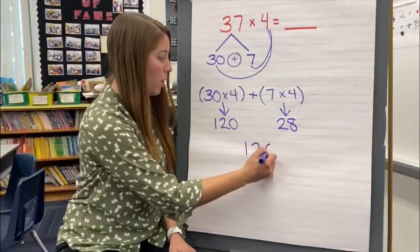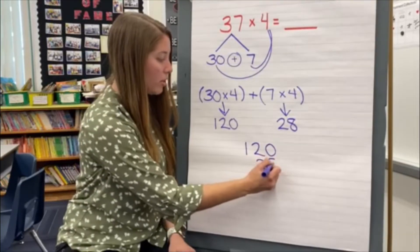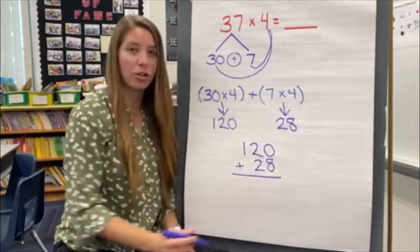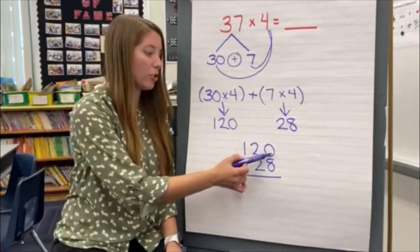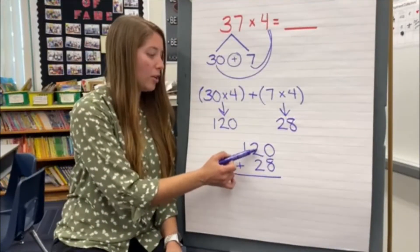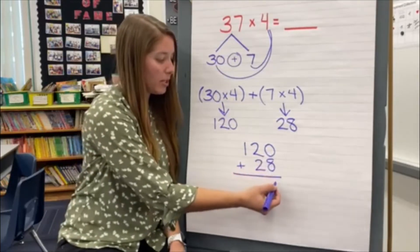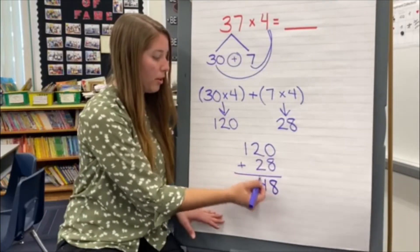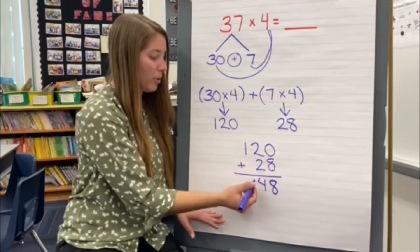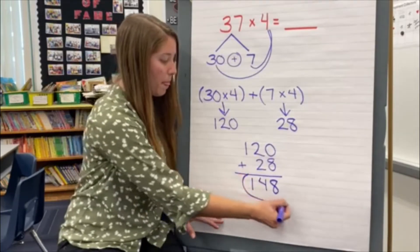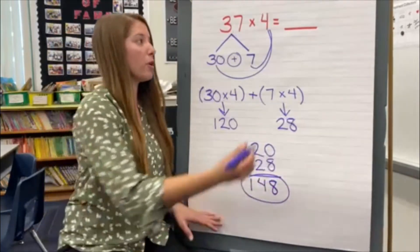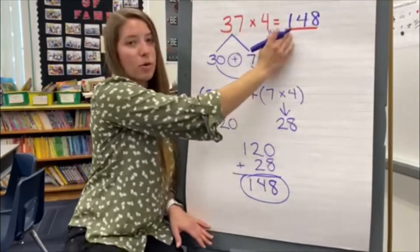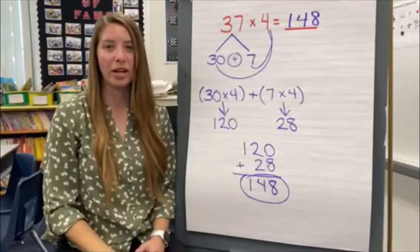Now the last step is to add these two numbers together to get our product. So 120 plus 28. Make sure you stack these numbers carefully — all your ones with your ones and your tens with your tens. 0 plus 8 is 8, 2 plus 2 is 4, and 1 plus nothing is 1. So 148 is our answer: 37 times 4 equals 148.